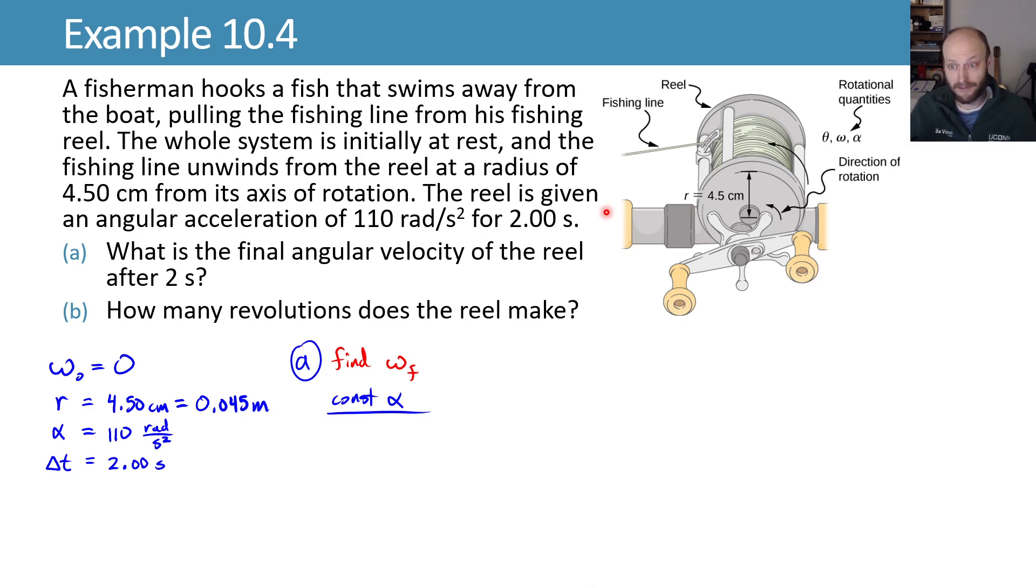We look at those equations, and we try and find one that has omega final and as many of these things as it can have. We find one that says omega final is equal to omega naught plus alpha t, plug in values of zero for omega naught, 110 radians per second squared for alpha, and two seconds for time, and we get a final angular velocity of 220 radians per second.